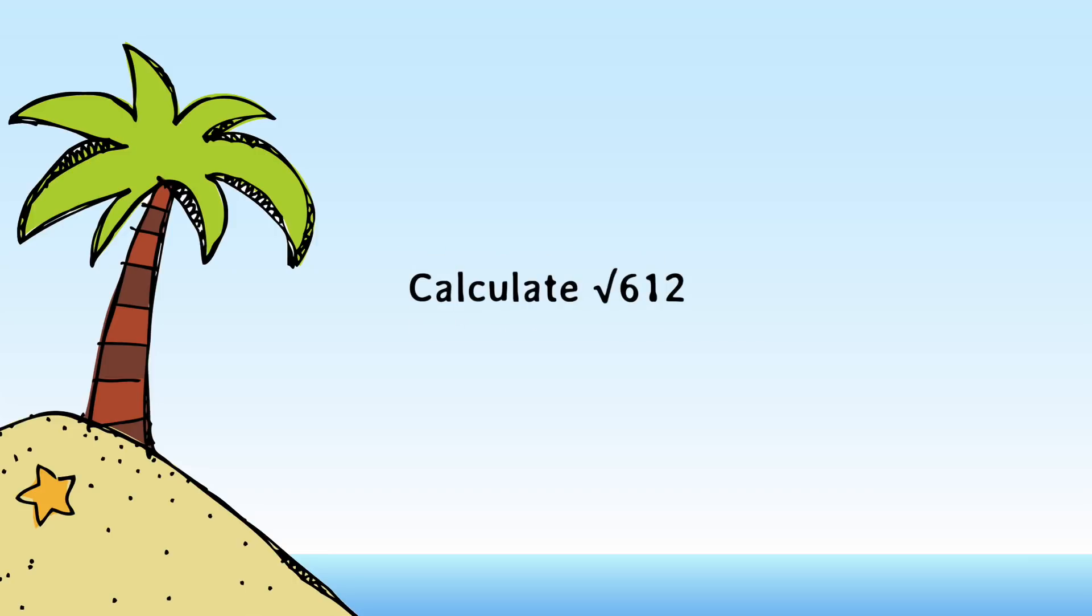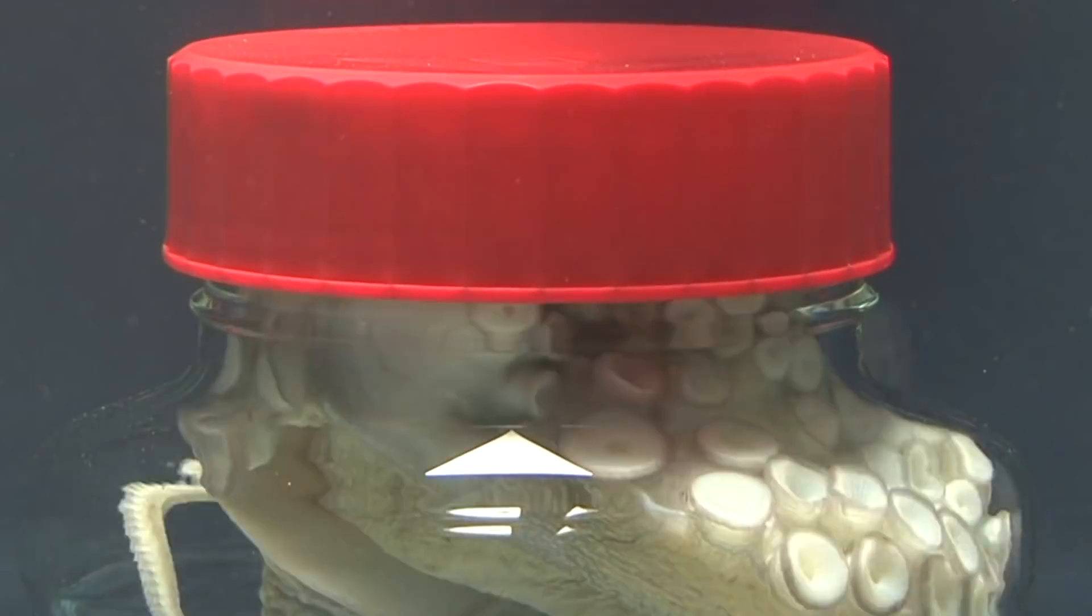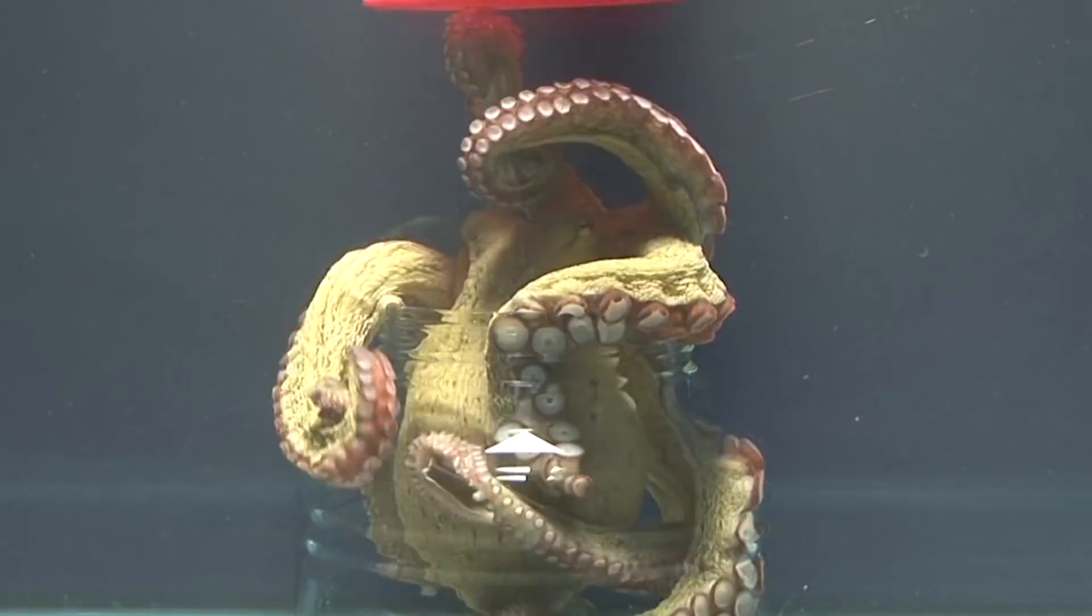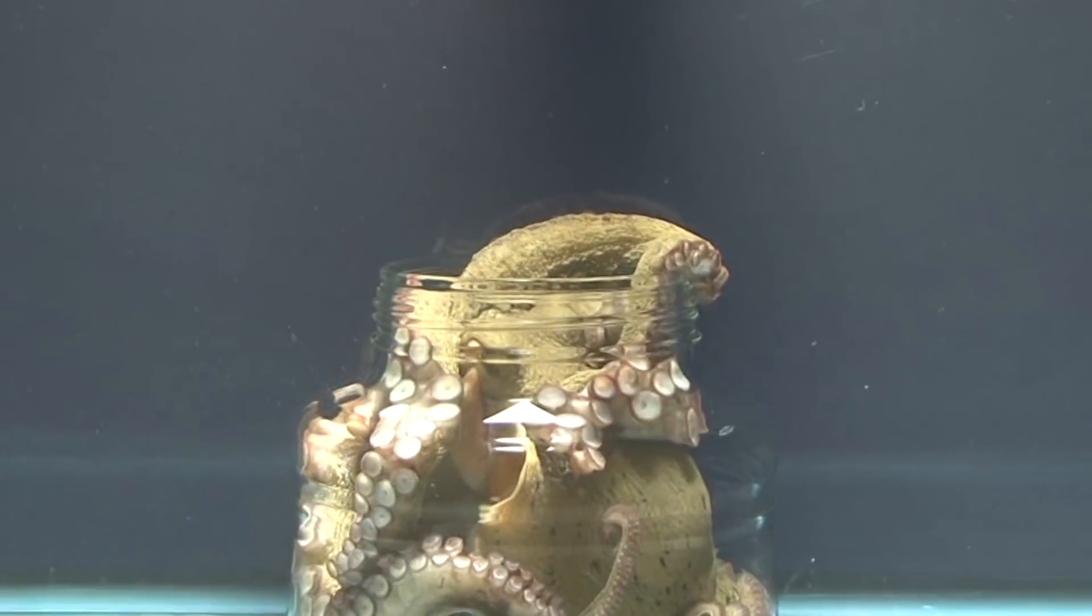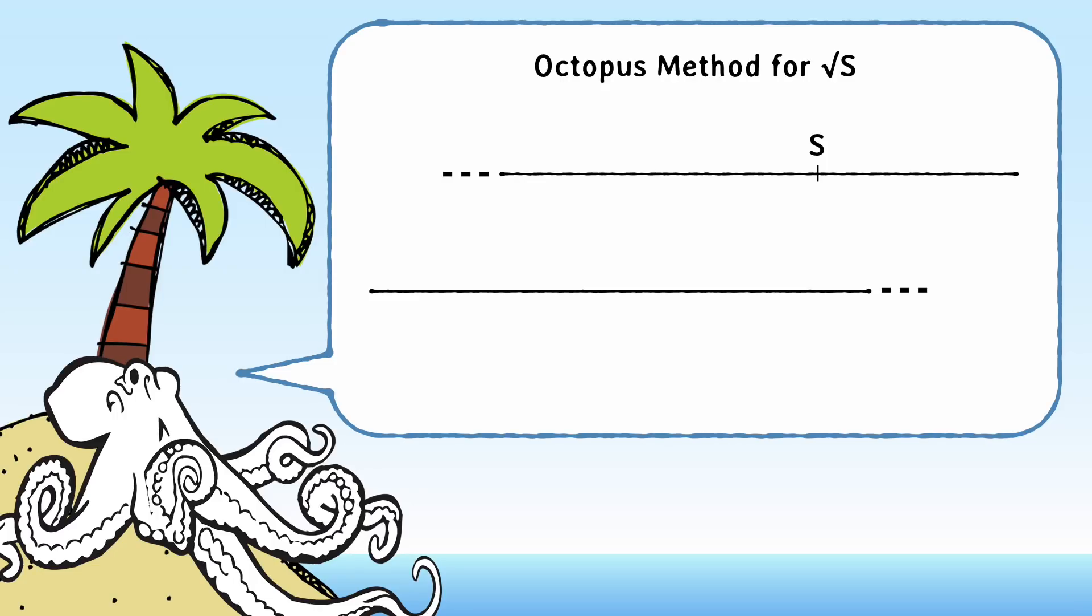The first thing you might try is pretty basic, and we'll call that the octopus method. Octopuses are actually pretty smart. They can open jars and solve puzzles and everything, so it seems plausible they'd manage this one. The octopus might start by asking, well, which perfect squares are closest to the number on either side? Find those, and the square root you're looking for is somewhere in between.